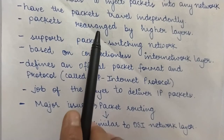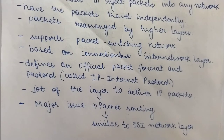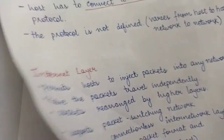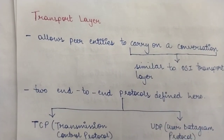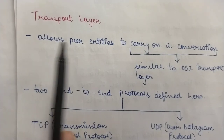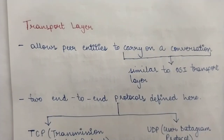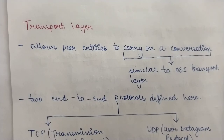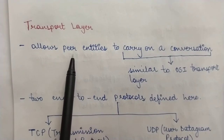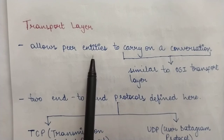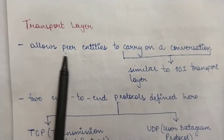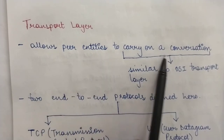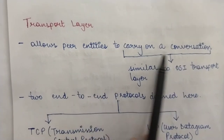The internet layer is similar to the network layer of the OSI reference model, whose job is also to choose a proper and optimal route so that packets are delivered to the right destination. Now let's move to the third layer of the TCP/IP reference model — the transport layer. The transport layer is immediately above the internet layer and is designed to allow peer entities to carry on a conversation.